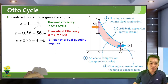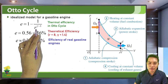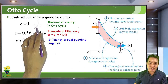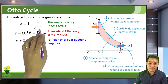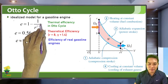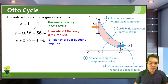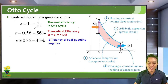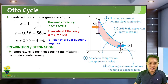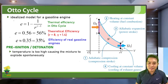The theoretical efficiency of a gasoline engine can be increased by increasing the compression ratio r. As r increases, 1/r becomes very small, so 1 minus a small number gives a higher efficiency. To achieve higher r, one approach is to use premium high-octane gasoline. This helps prevent common problems such as pre-ignition or detonation — where the temperature becomes too high and causes the mixture to explode spontaneously without the spark plug.